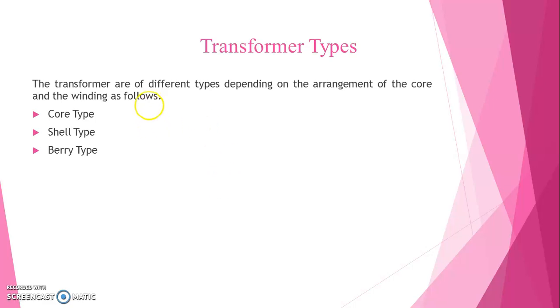Let us take the types of transformer based on its construction. They are core type, shell type and berry type. Berry type used to be rarely.